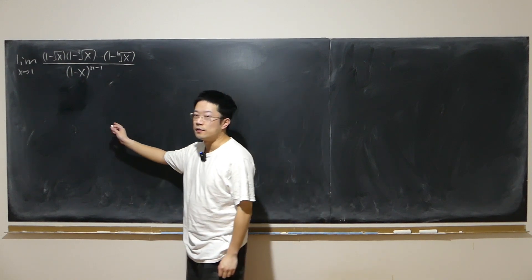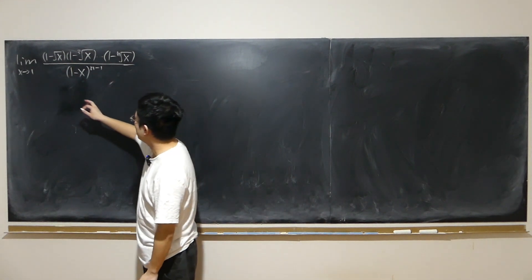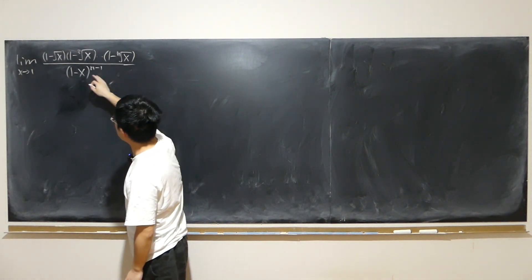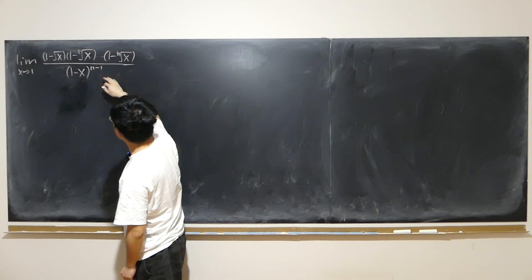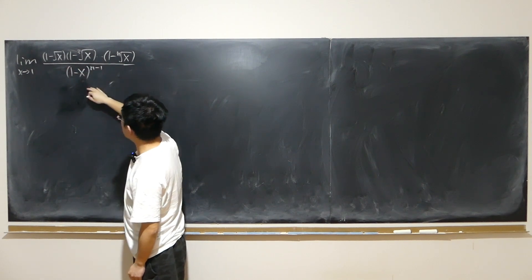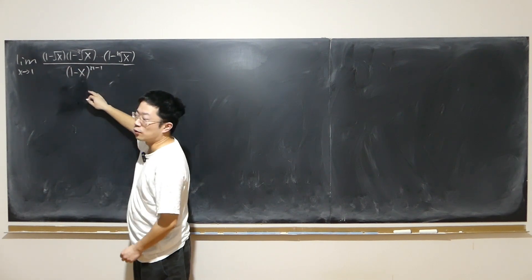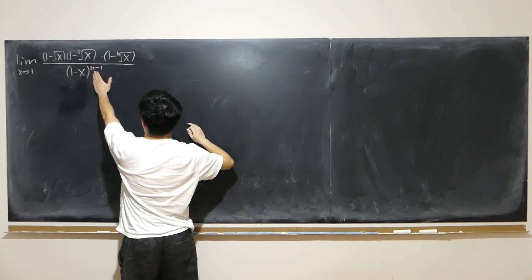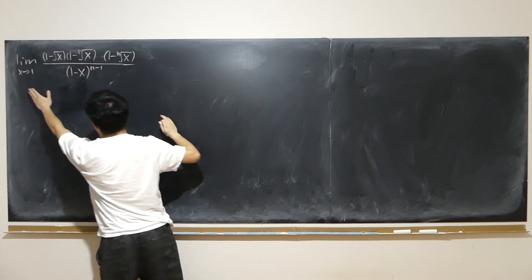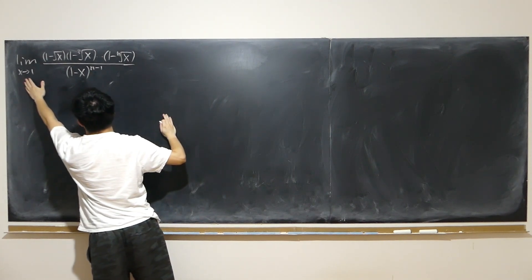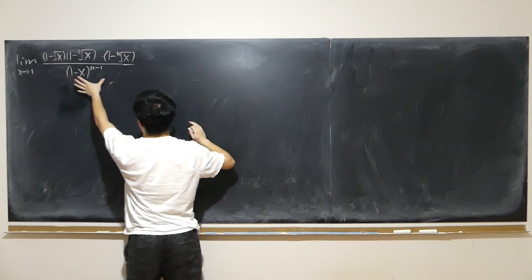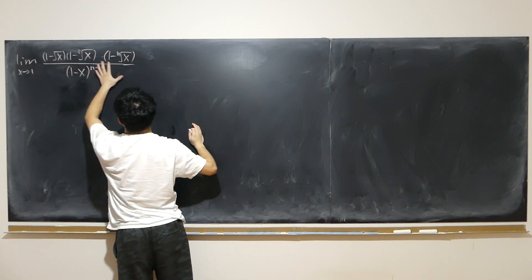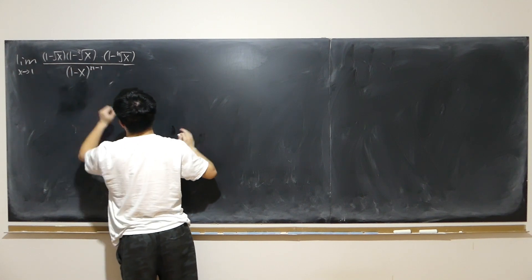Let's have a look at this limit. As x approaches 1, we have this massive undetermined form. Remember, n stays fixed. x is approaching 1, so we have 0 at the bottom, and also 0 times 0 times 0, so undetermined.